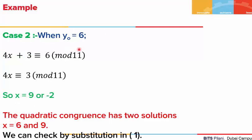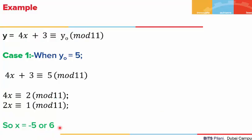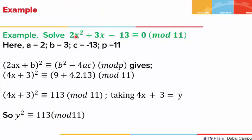In the second case y₀ = 6, so 4x + 3 ≡ 6 mod 11. Taking 3 to the other side, the solution is x = 9 (or -2). So the quadratic congruence has two solutions: x = 6 and x = 9. We can verify by substituting both values into the original congruence.